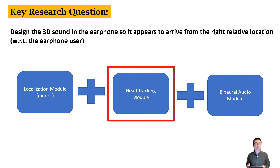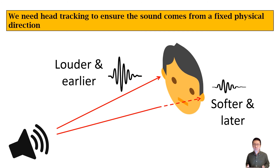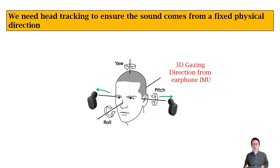Now let's look at the head tracking module. We use the earphone IMU for head tracking to ensure the sound comes from a fixed physical direction. When the user turns her head, to ensure the virtual sound still comes from the same physical direction, we need to change the binaural audio direction relative to the human head to compensate for the head turn. Head tracking is achieved using the earphone IMU, specifically gyroscope integration.